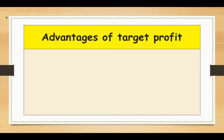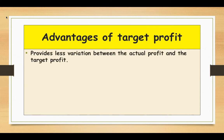We will see the advantages of the target profit decision. First, this provides less variation between the actual profit and the target profit. Because setting the target profit covers the evaluation of the sales level, or the amount of revenue needed to be generated to earn a target profit after covering fixed and variable overhead expenditure in the targeted period, which leads to an accurate target profit forecast.